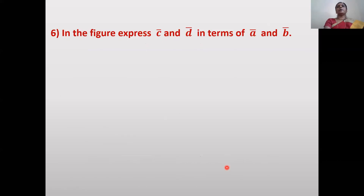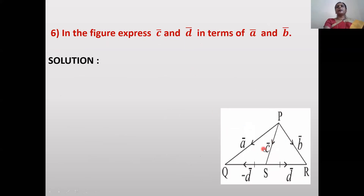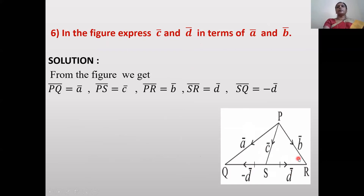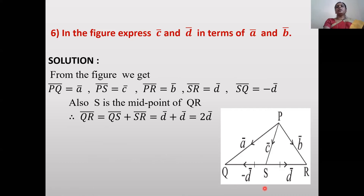Next problem: From the figure, express c̄ and d̄ in terms of ā and b̄. From the figure: PQ̄ = ā, PR̄ = b̄, SR̄ = d̄, SQ̄ = -d̄. Since SR̄ and SQ̄ have the same magnitude but opposite directions, S is the midpoint of QR.